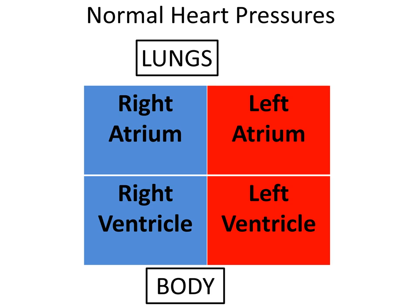To begin, we first need to discuss the normal circulation and pressures within the heart. The chart presented here represents a simplified heart with associated circulation. The right atrium receives blood from the inferior and superior vena cava and has a normal pressure range of one to five millimeters of mercury.